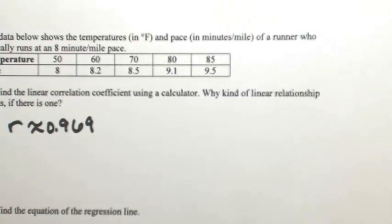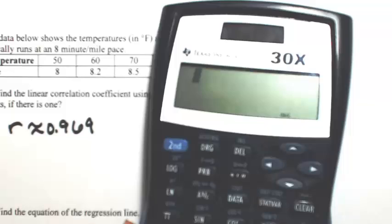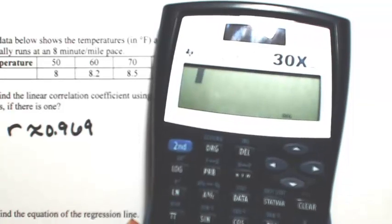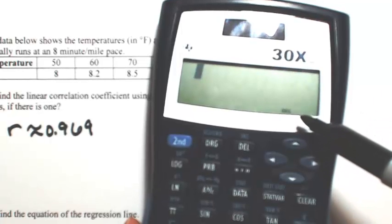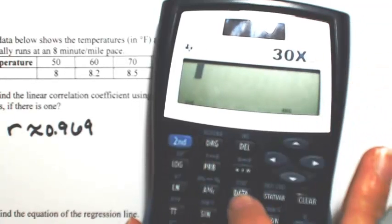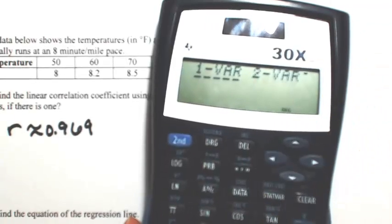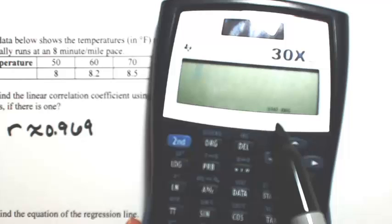Another type of scientific calculator you can use is the TI-30X2. You start out similarly, but you have to make sure that the stat mode is activated. Right now only DEG for degree is highlighted, so hit SECOND DATA to activate the stat. Then select two variables, scroll over to two, hit enter. Now you can see that STAT is lit up.